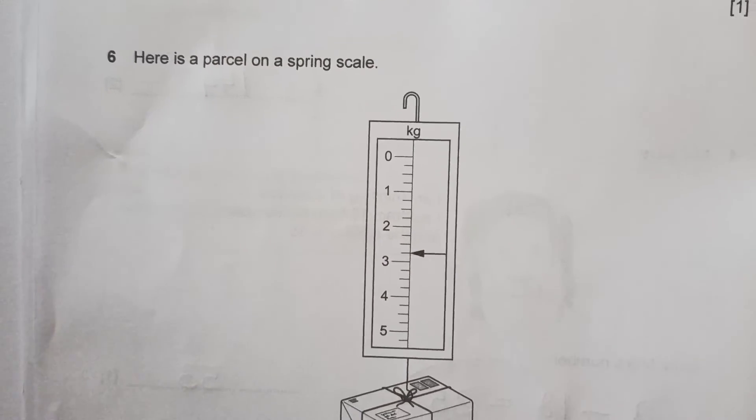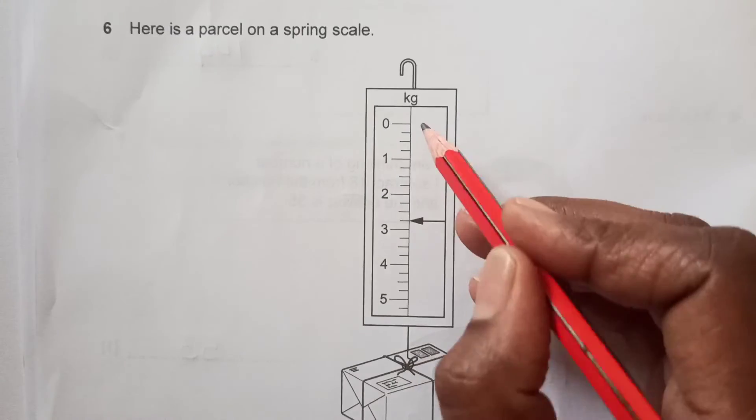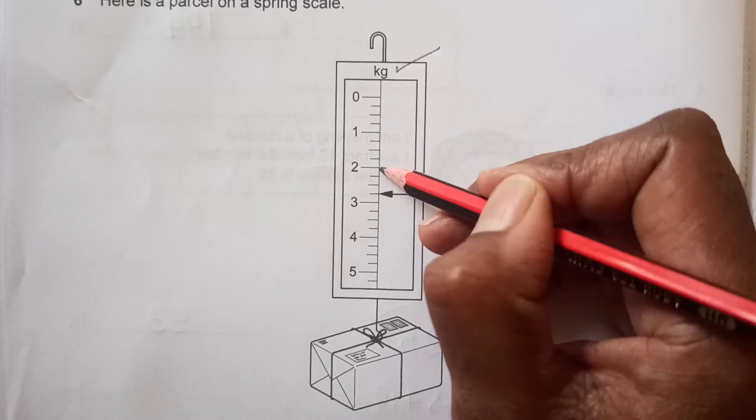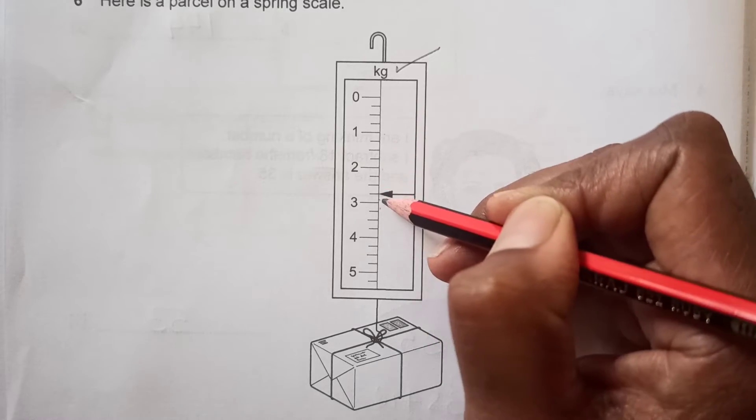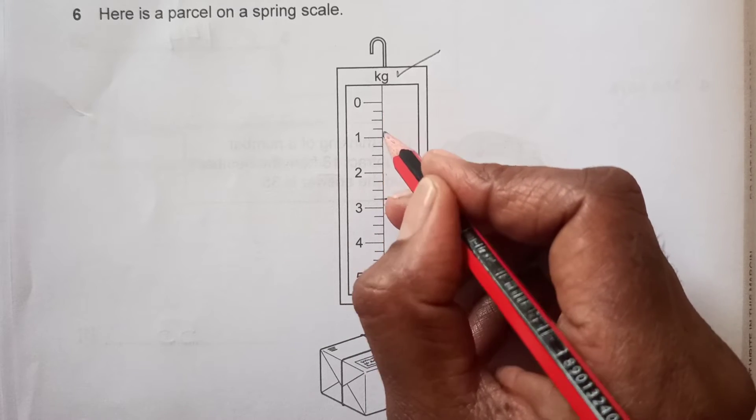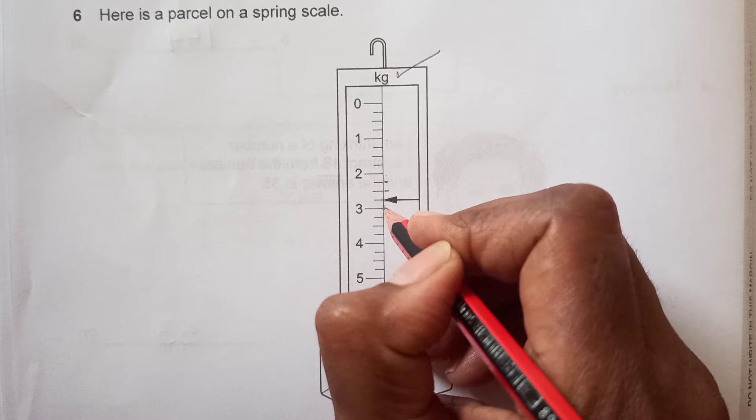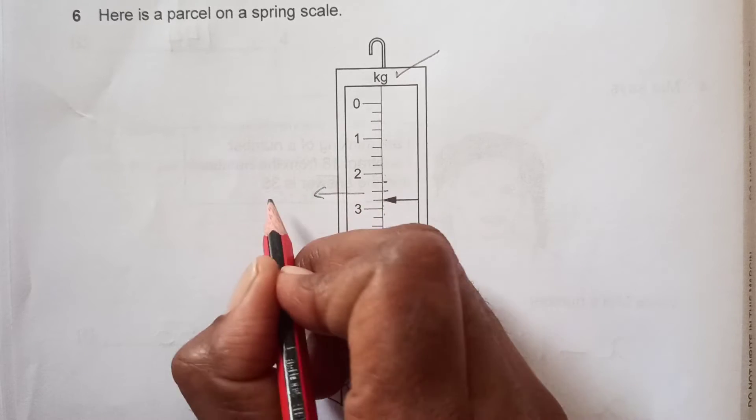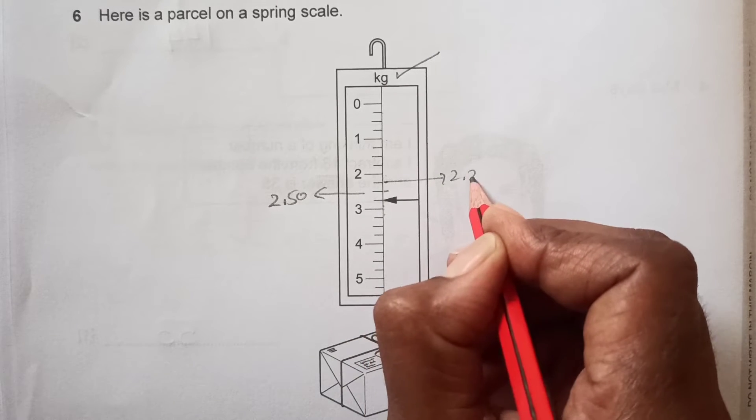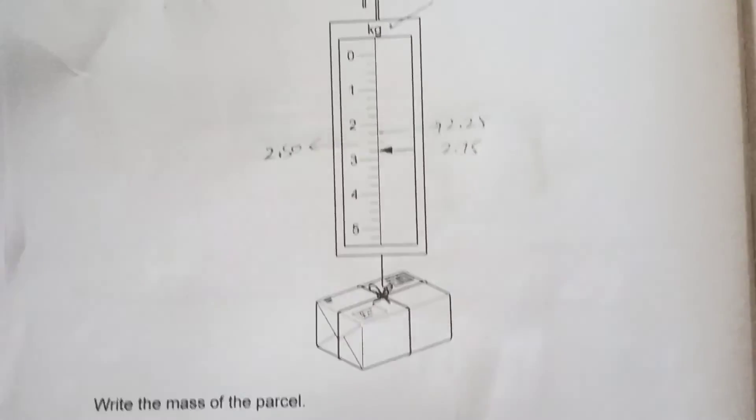Number 6: Here is a parcel on a spring scale, which is in kilograms. Write the mass of the parcel. You see here we have 0, 1, 2, and 3, less than 3, between 2 and 3. If you observe, there are 1, 2, 3, 4, 5 sections there. So if this is 2.2, 2.4, 2.6, then this is 2.8. So that means this middle one is 2.50, and then this is going to be 2.25, and this is going to be 2.75. So that is 2.75 kilograms.